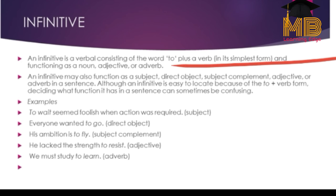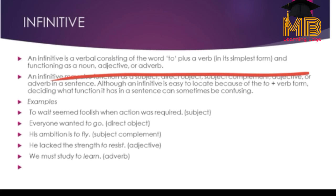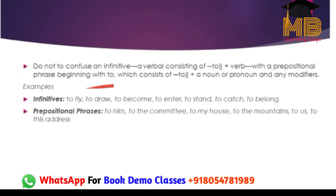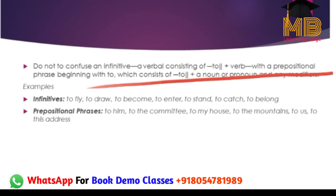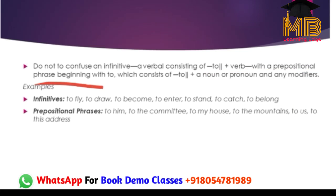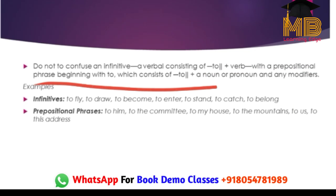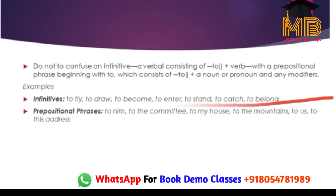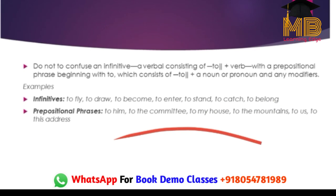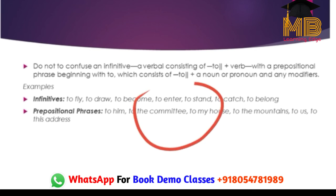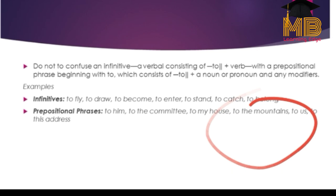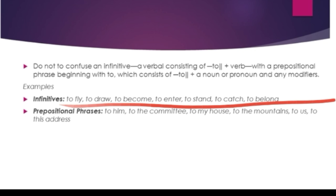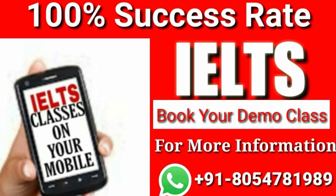So basically, 'to' plus the verb form is an infinitive which can act as a noun, adjective, or adverb — something you will have to figure out from context. Do not confuse an infinitive, which is 'to' plus a verb, with a prepositional phrase beginning with 'to' plus a noun. Infinitives are like: to fly, to draw, to become, to enter, to stand, to catch. Prepositional phrases would be: to him, to the committee, to my house, to us, to this address — where you have nouns or pronouns, not verbs.